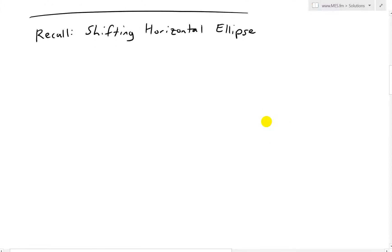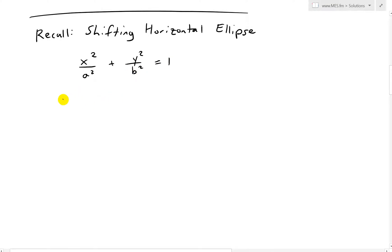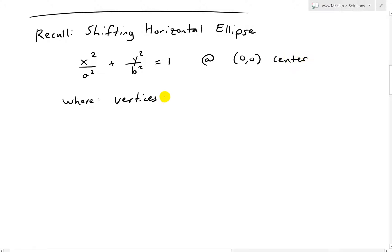Recall from my earlier videos on shifted conics: a horizontal ellipse looks like x²/a² + y²/b² = 1. This is for the origin at (0, 0) as center. The vertices are at (±a, 0), the foci are at (±c, 0), and c² = a² - b².